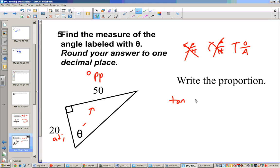So I'll write the tangent of our angle theta as our opposite side, which is 50, over our adjacent side, which is 20. So now, if I want to find theta, I take the inverse tangent of 50 over 20.